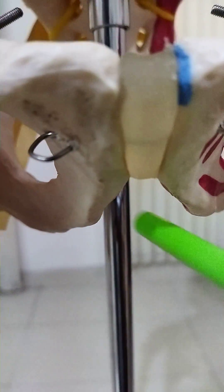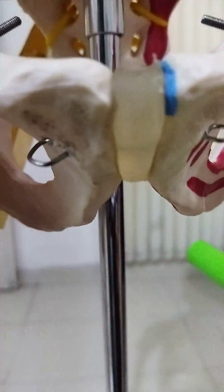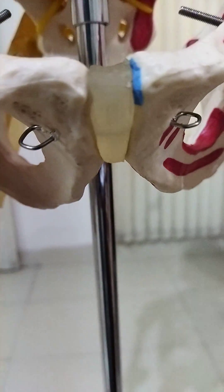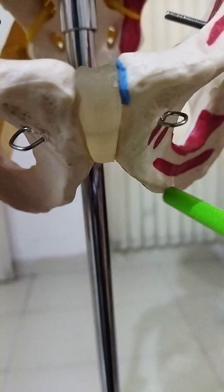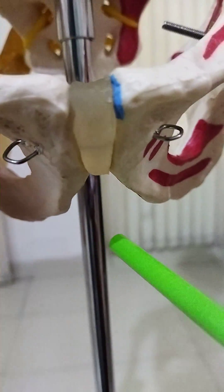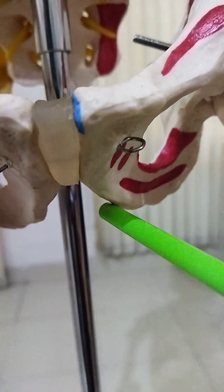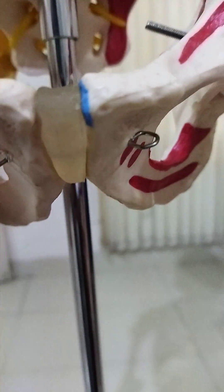In the superficial perineal pouch three muscles are present: the superficial transverse perineum, bulbospongiosus, and ischiocavernosus. The urogenital diaphragm is formed by two muscles, sphincter urethrae and deep transverse perineum muscle. These muscles are supplied by the pudendal nerve.